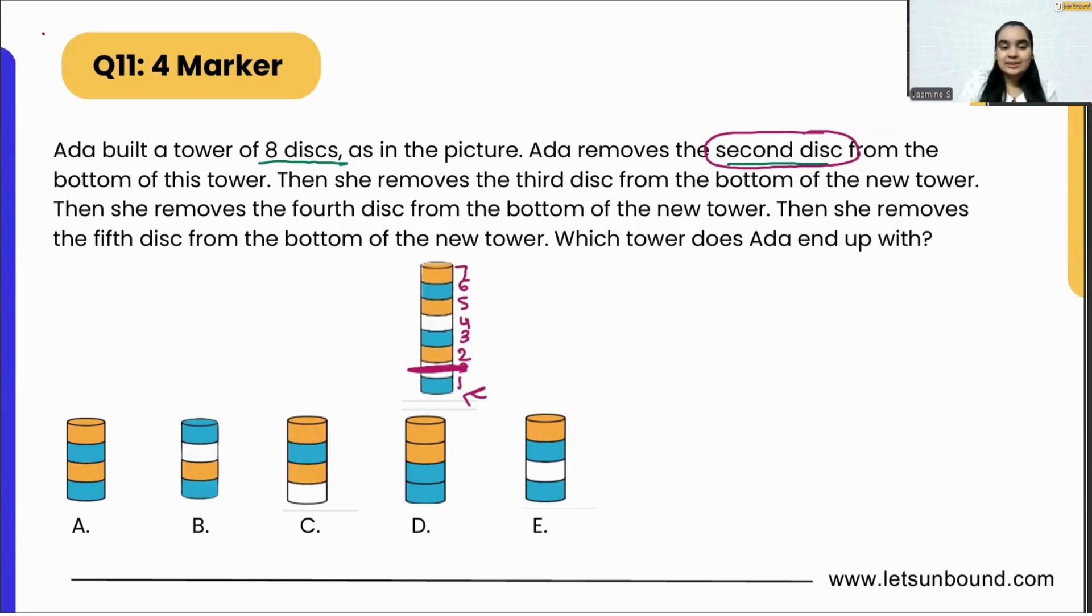Then she removes the third disc from the bottom of the new tower. That means this disc has been removed. Now disc number one and number two are the same, but the rest will again change.